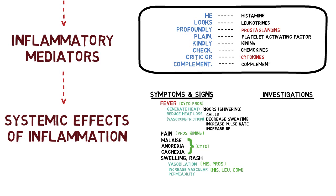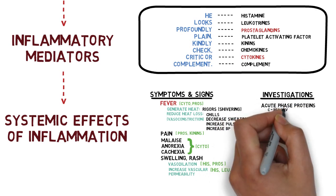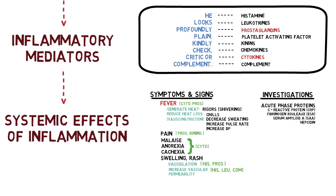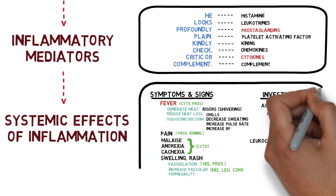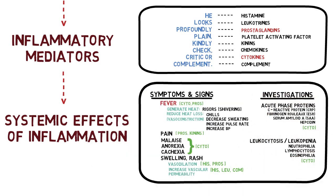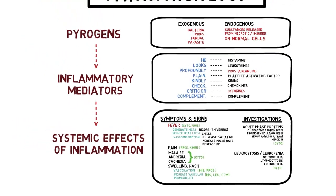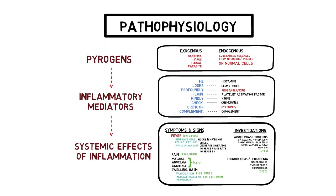Swelling or rashes are also part of systemic effects, happening through vasodilation caused by histamine and prostaglandin, and increased vascular permeability caused by histamine, leukotrienes or complement proteins. Other manifestations seen in laboratory investigations include increased acute phase proteins such as CRP, fibrinogen, serum amyloid proteins and hepcidins — triggered by cytokines — as well as changes in white cell count, either leukocytosis or leukopenia. Keep in mind that not all mediators are released in every case of inflammation, as that depends on the trigger.